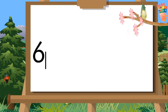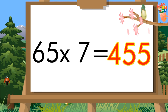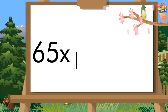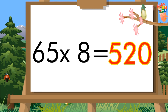65 times 7 is 455. 65 times 7 is 455. 65 times 8 is 520. 65 times 8 is 520.